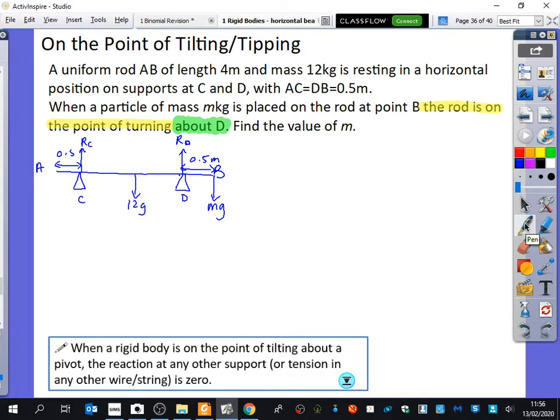So what this means that's going to happen here is it's resting on two supports like this. This, my right hand is C and my left hand is D. If it is on the point of tilting about D, that's because there's a mass that's being placed at this end.